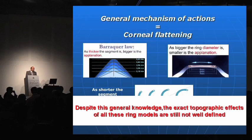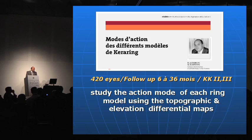With a shorter segment we have bigger astigmatism correction, and with the longer one we have bigger spherical correction. Despite this general knowledge, the exact topographic effects of all these ring models are still not well defined. For two years, I've been focusing on the action mode of different models of Keraring.